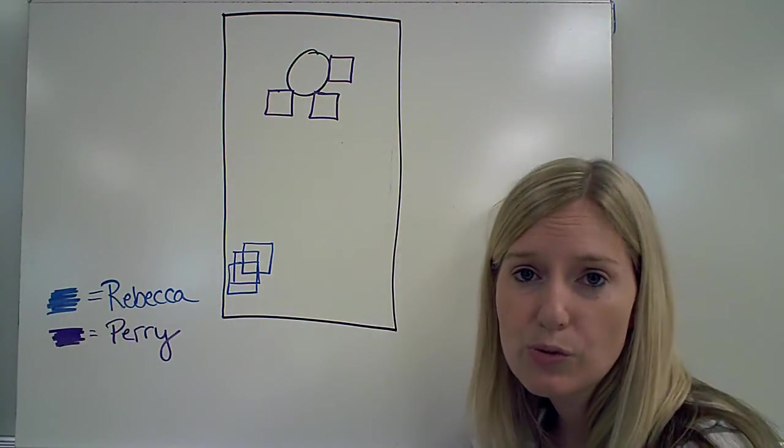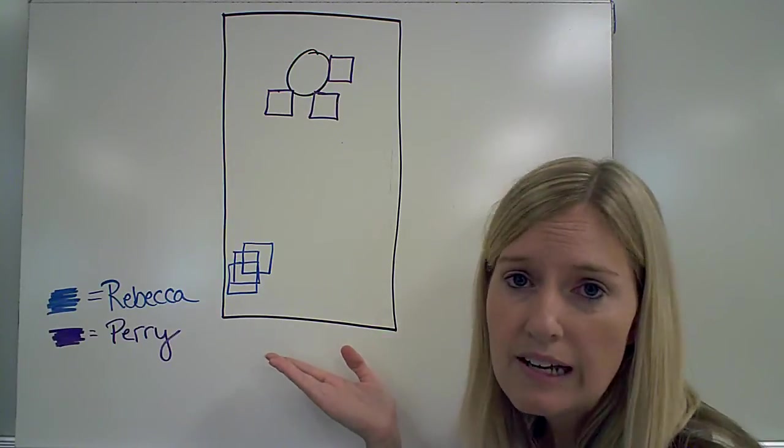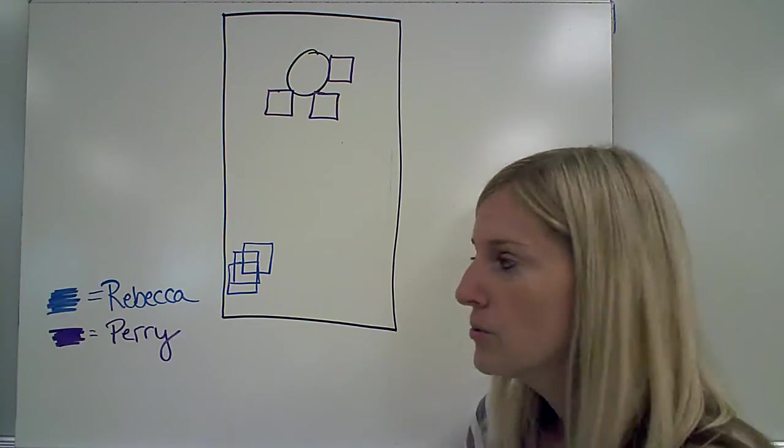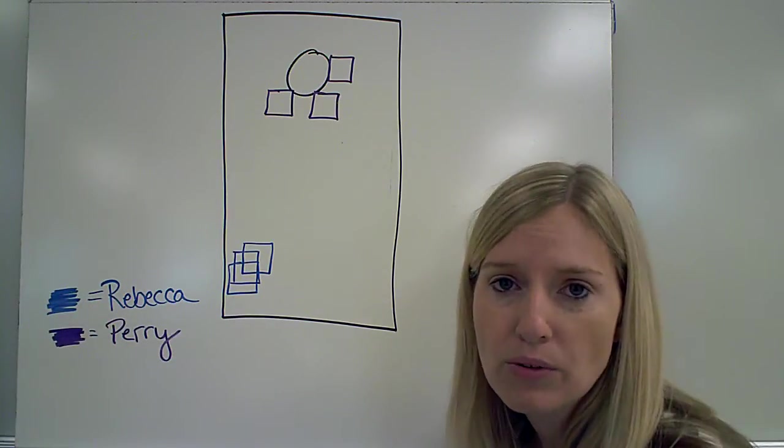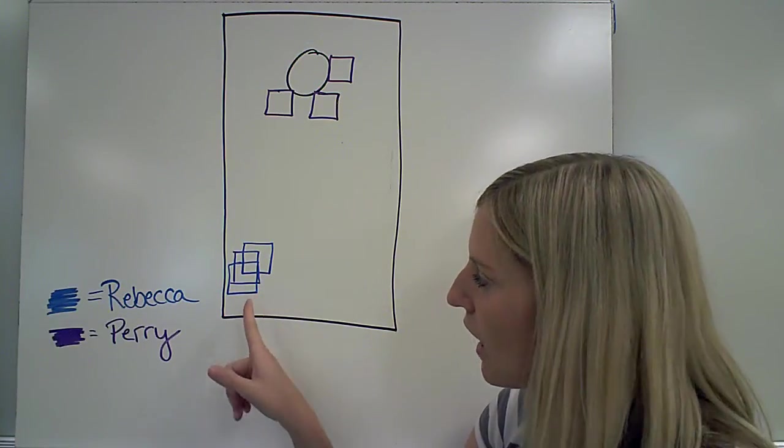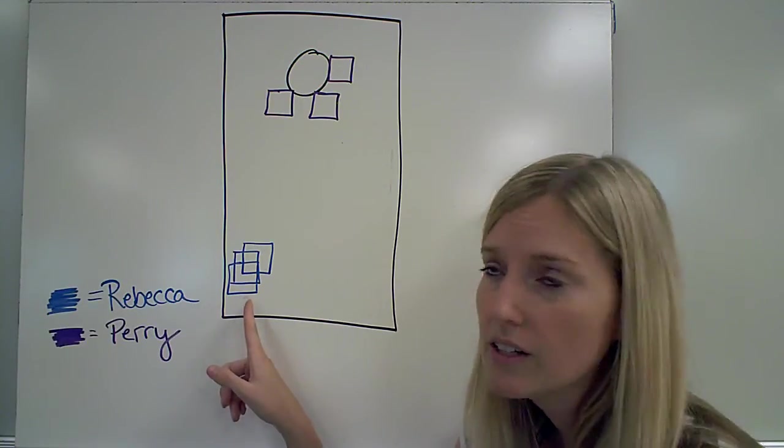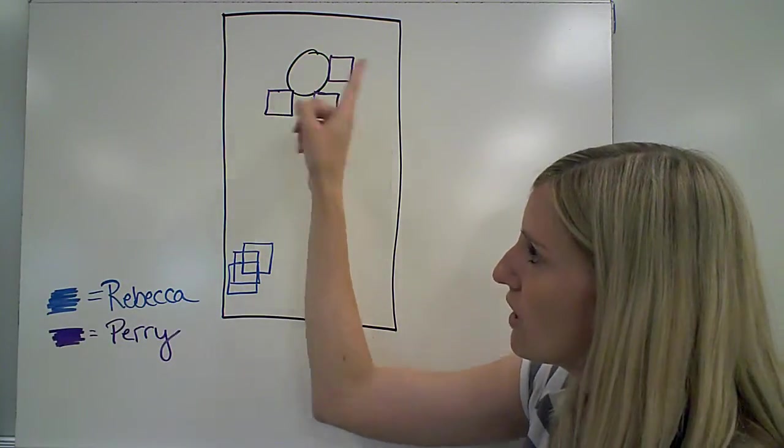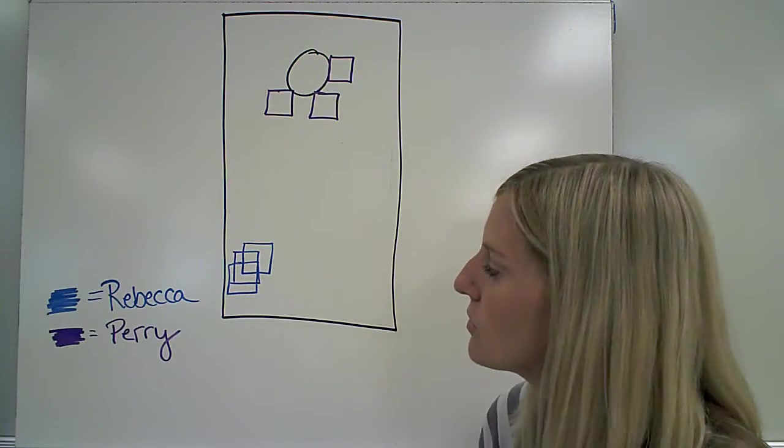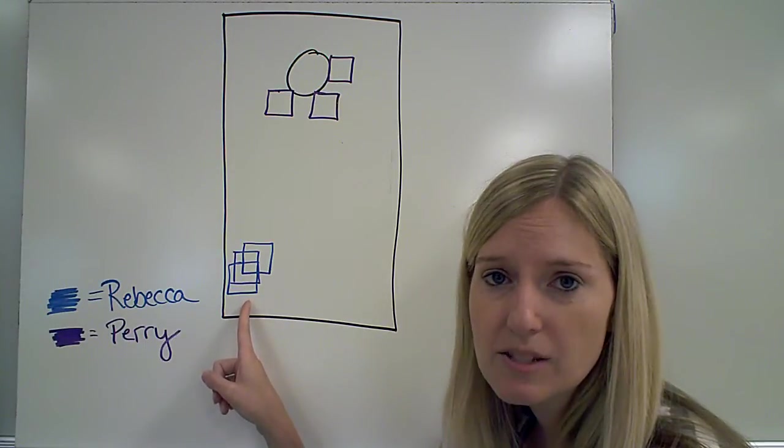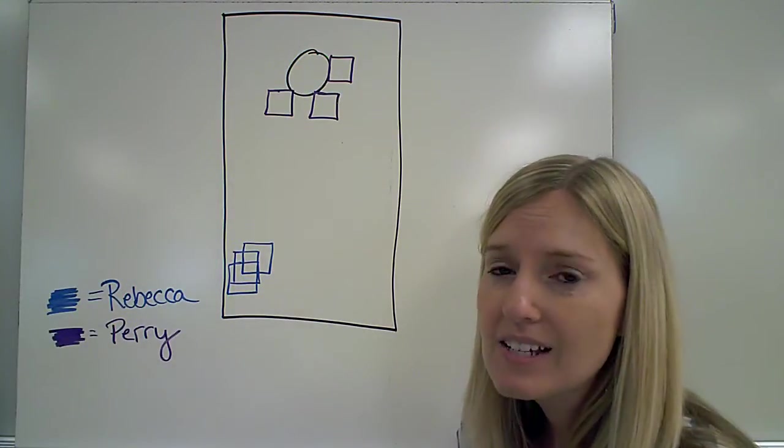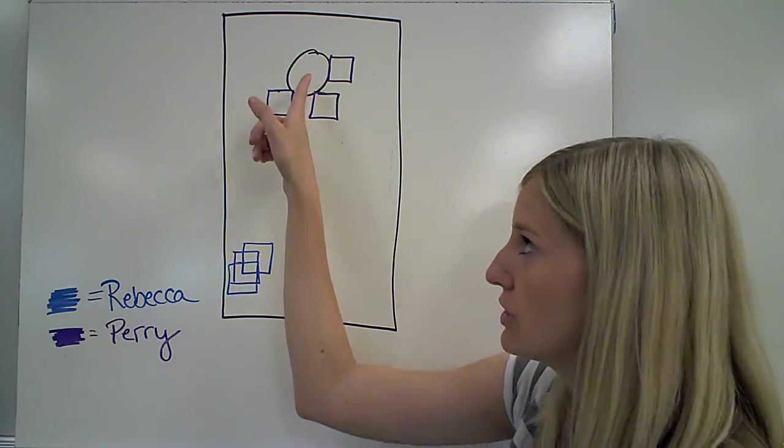Another way to look at this is visually. Here I have a cornhole board, and these squares are representing the beanbags that have been thrown. If I assume that Rebecca and Perry have both thrown three beanbags, Rebecca's are here at the bottom of the board, very close together. Perry's are not as close together, but they are closer to the hole, which is the goal of cornhole. In this case, Rebecca is more precise because she repeated the same throw. Perry is not as precise, but he is more accurate because he is reaching the goal.